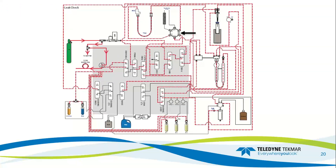If all of the subsystems pass the leak check but the whole system continues to fail, the leak can be isolated to the following areas: loose fittings in the six-port valve, a potential cross-port leak in the six-port valve, the trap fittings — tighten those if you recently changed the trap, or since the trap is heating and cooling constantly those might loosen — or the fittings on the moisture control system.